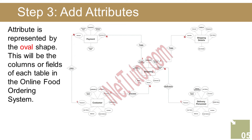The delivery personnel entity has the following attributes: Delivery_Personnel_ID (primary key), last name, first name, middle name, contact, email address, address, username, password, and account status. The payment entity has: Payment_ID (primary key), reference number, Customer_ID (foreign key), payment date, amount, and payment type.